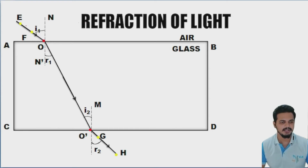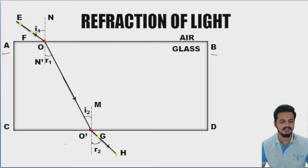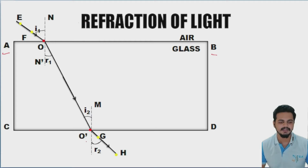Remove the glass slab. Join points E and F using a scale and extend the line until it reaches the AB line. In the lower part, connect G and H and extend it until it touches the CD line. Call this point O dash and the upper point O, then join O and O dash.